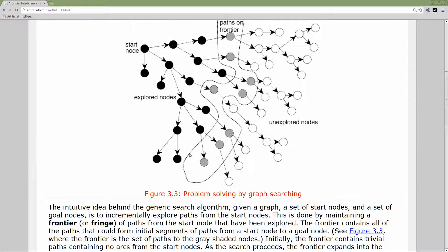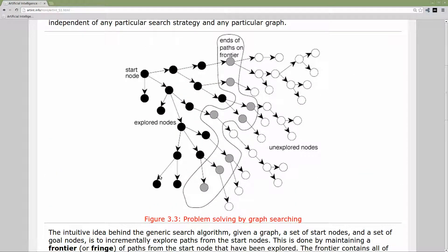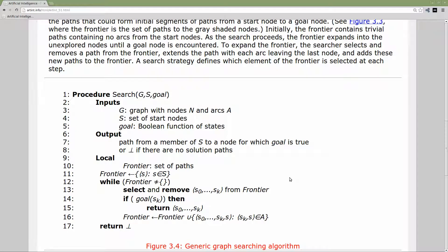If we skim back up to this figure, just to give you a general idea of what this is going to look like. This frontier, these things are what we're storing in that set. Notice that this says ends of paths on frontier. So the set contains these paths, and this is just indicating where all of those paths that we're currently examining end.